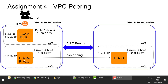In this assignment we will see how a private instance in VPC A can talk to a private instance in VPC B. The only way to reach the EC2 B instance is via the EC2 A instance. We'll start with creating these two VPCs and then see how to do VPC peering between them. The left-side VPC is exactly the same as the first assignment — a single VPC with a public subnet and a private subnet.